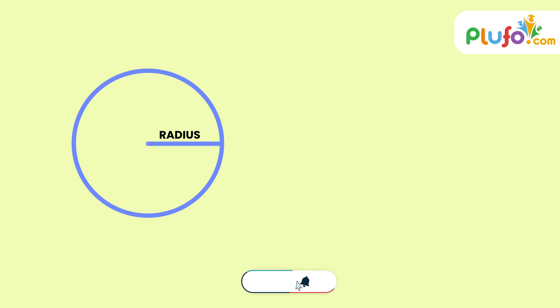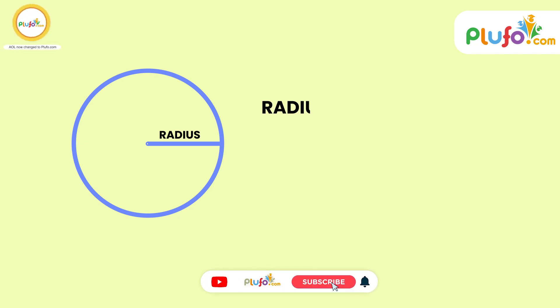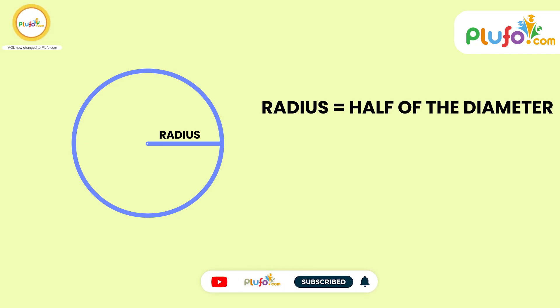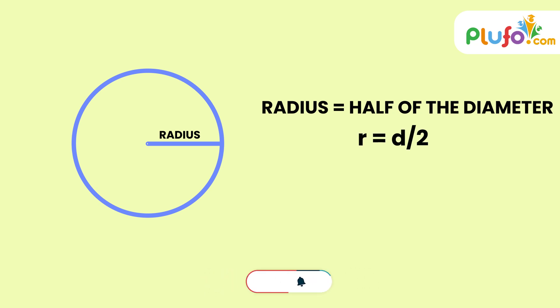Radius is equal to half of the diameter. The formula is: R equals diameter divided by 2.